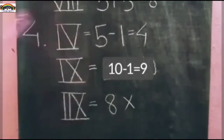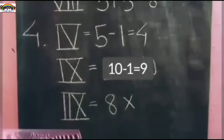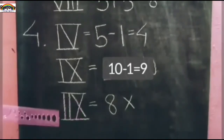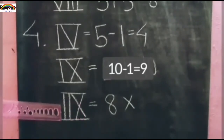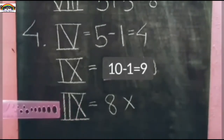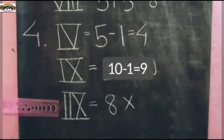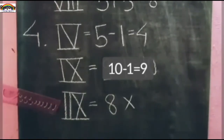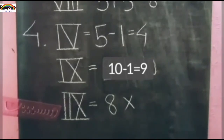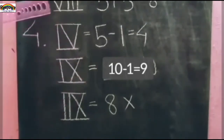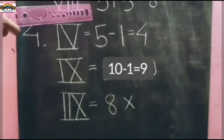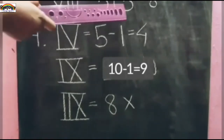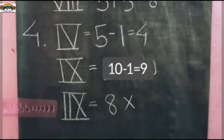अब IX में अगर X के left side में 2 times I लिखा हो — II X — तो यह wrong होगा, क्योंकि V और X के left side में I 1 से ज़्यादा नहीं लिख सकते। अगर आपको 8 लिखना है तो लिखना पड़ेगा VIII: 5 plus 1 plus 1 plus 1 equals 8. तो II X यह wrong है।